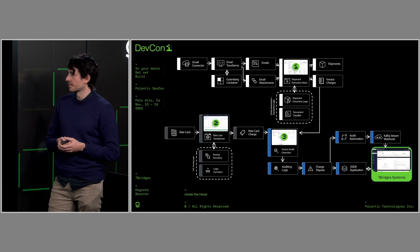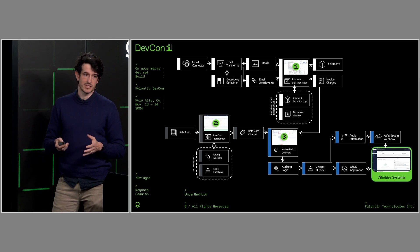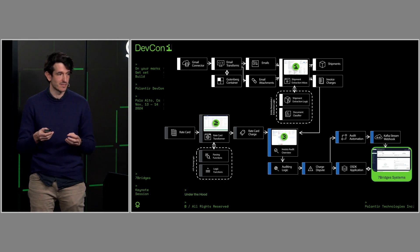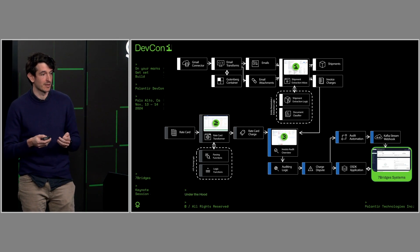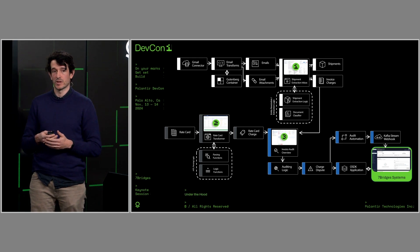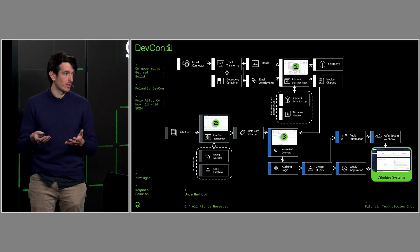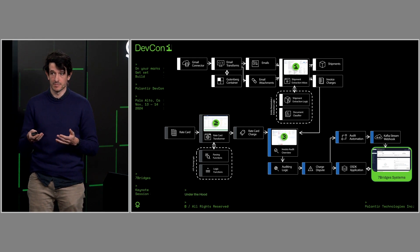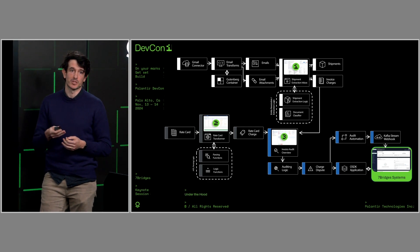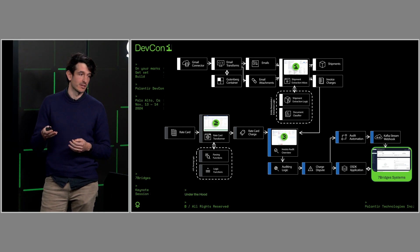Finally, step three is the audit itself. We take those two pieces of data and ask an LLM to identify where discrepancies exist, create disputes and alerts for those discrepancies, and then using an automation function push that through a Kafka stream into our application.